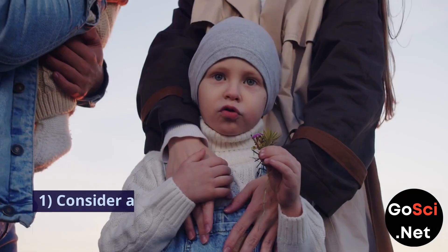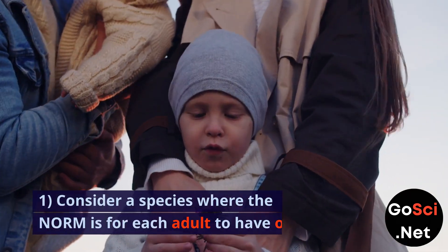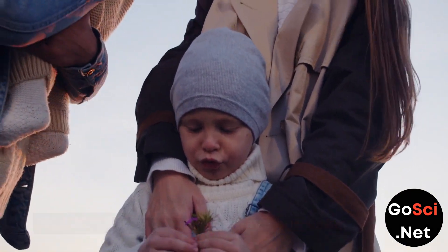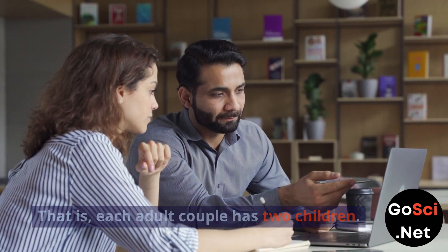Scenario 1 million. Consider a species where the norm is for each adult to have one child. That is, each adult couple has two children.